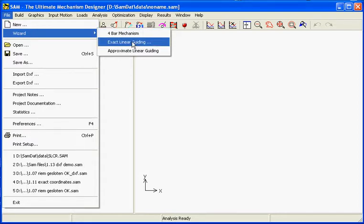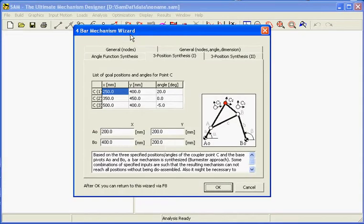Exact linear guiding and approximate linear guiding. As a first example we will build a four-bar mechanism of the type three-position synthesis.